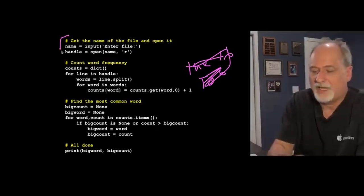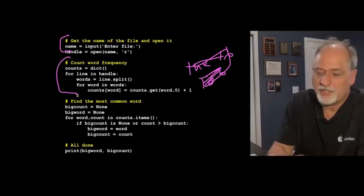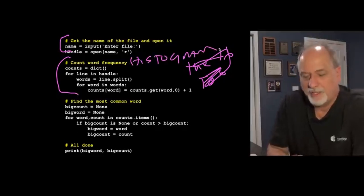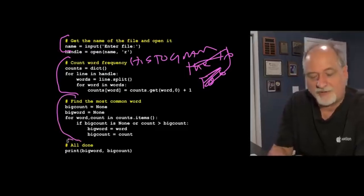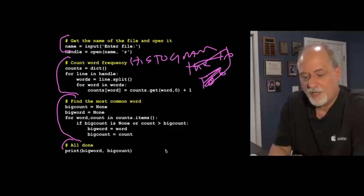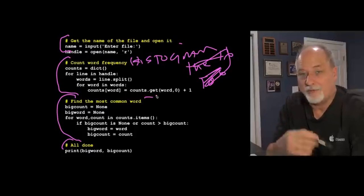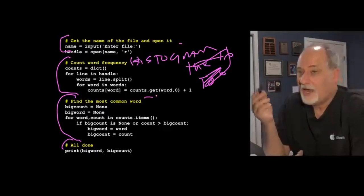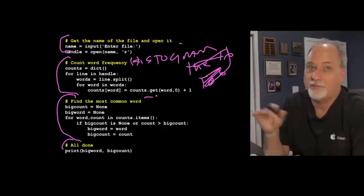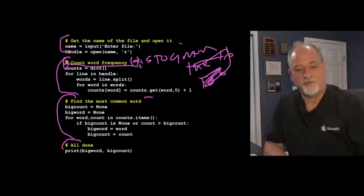What we've done here is I've added some comments that are really for human consumption. This first paragraph is get the name of the file and open it. The second paragraph is count the word frequency. Here I'm putting this pound sign in. Find the most common word, and then I'm all done. I print the stuff out. All I'm saying is comments are for people to read. Your next programmer or the person who's going to change your program after you're done with it. You put a pound sign in and you can write anything you want from that point forward.